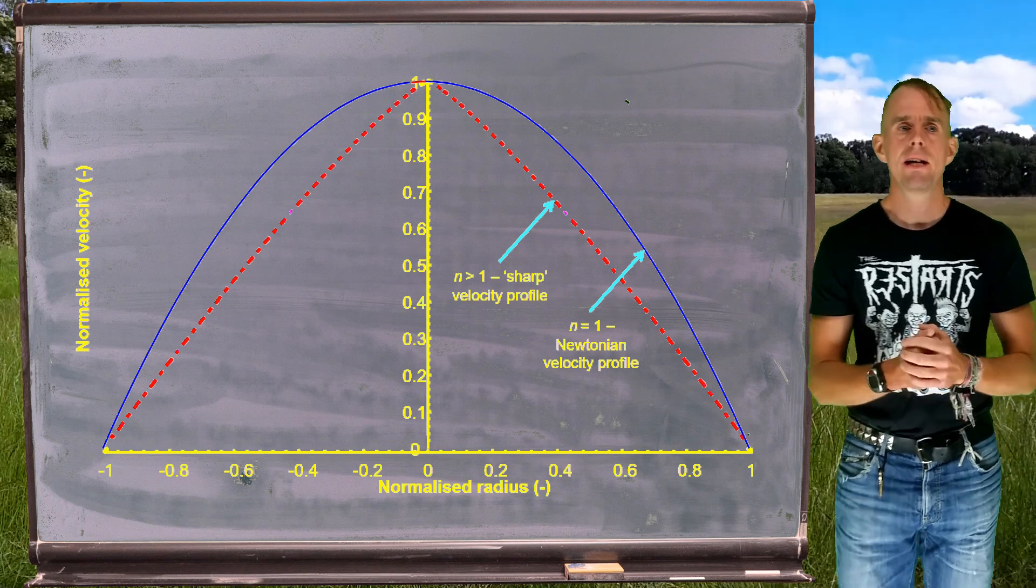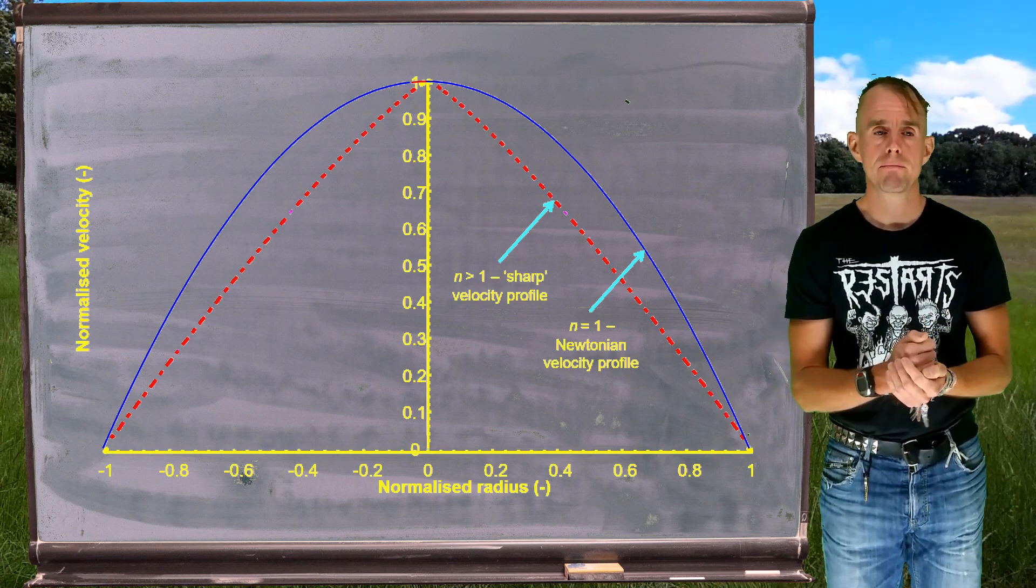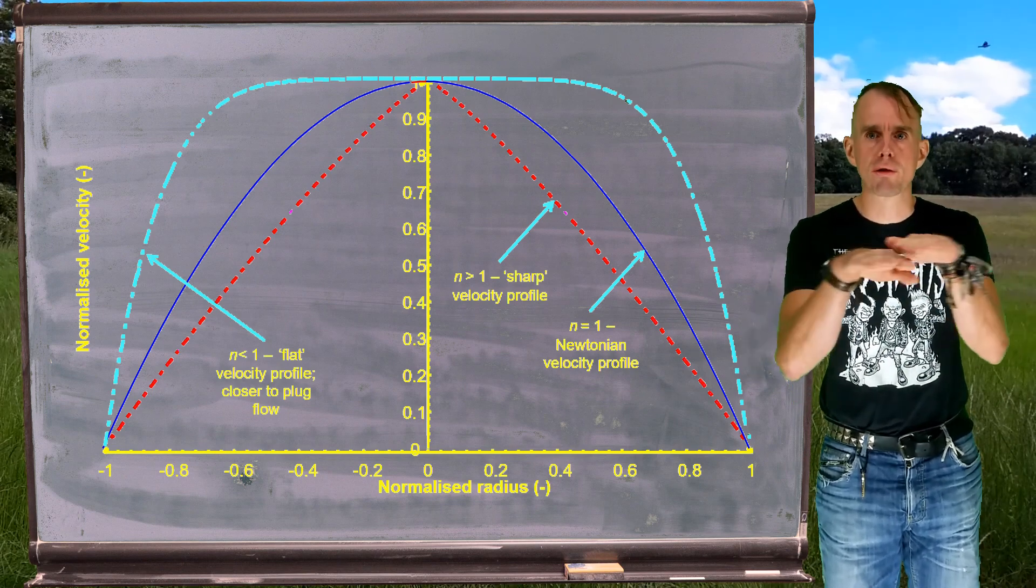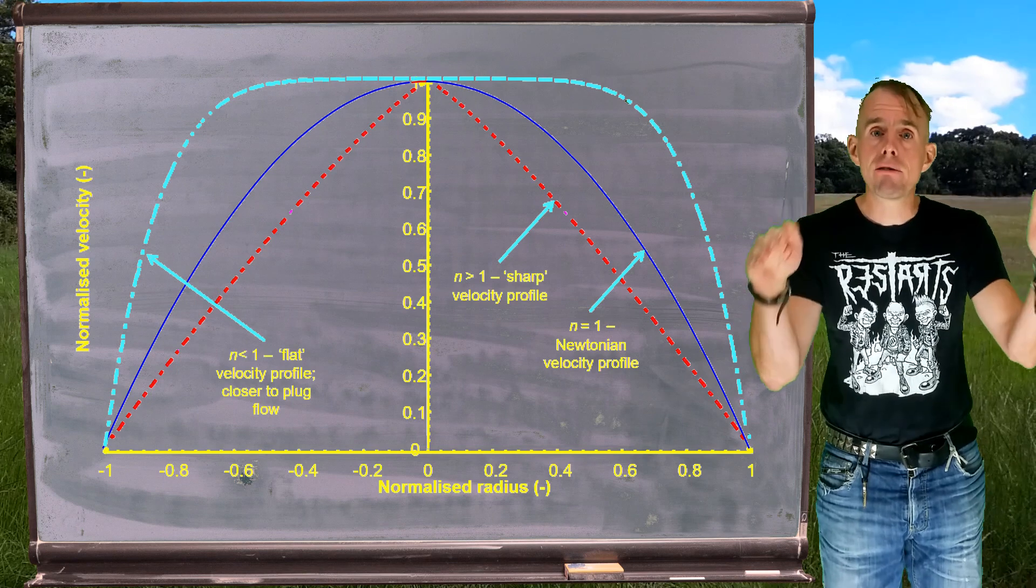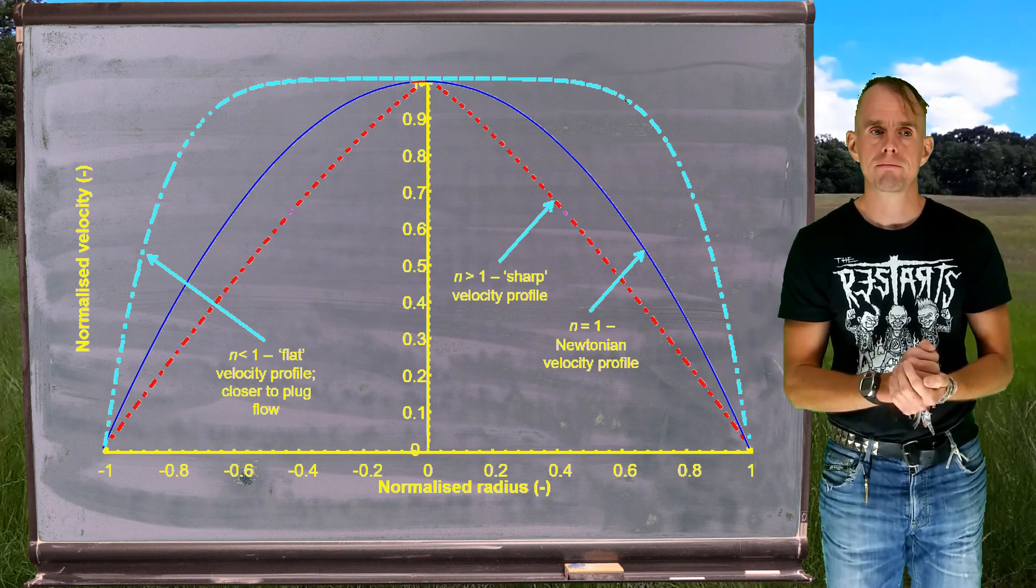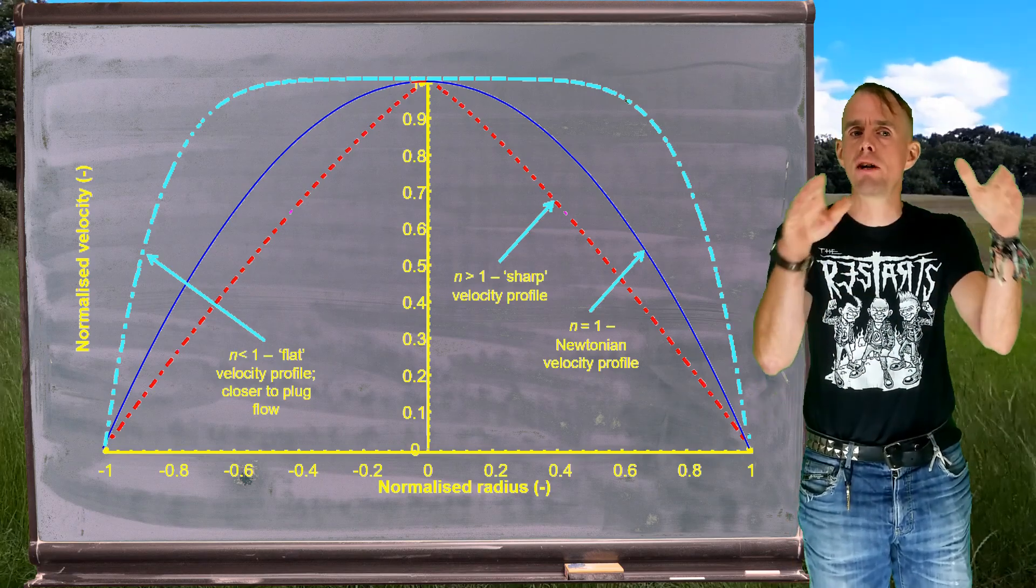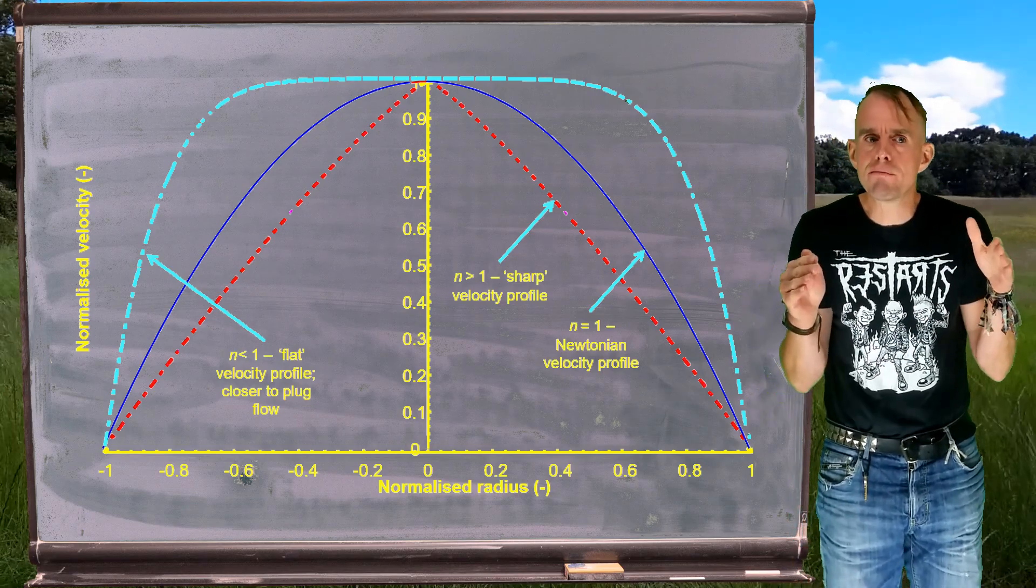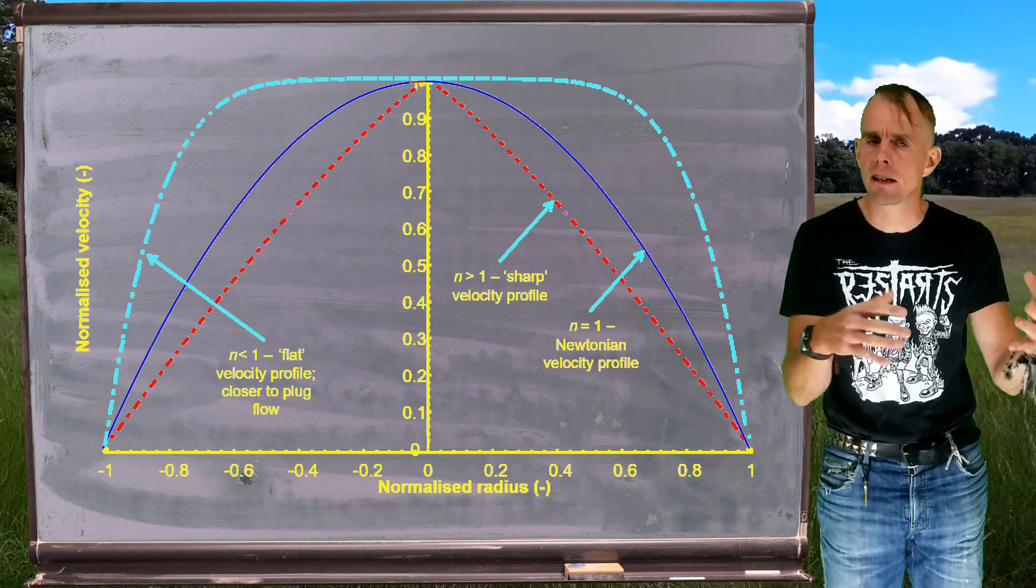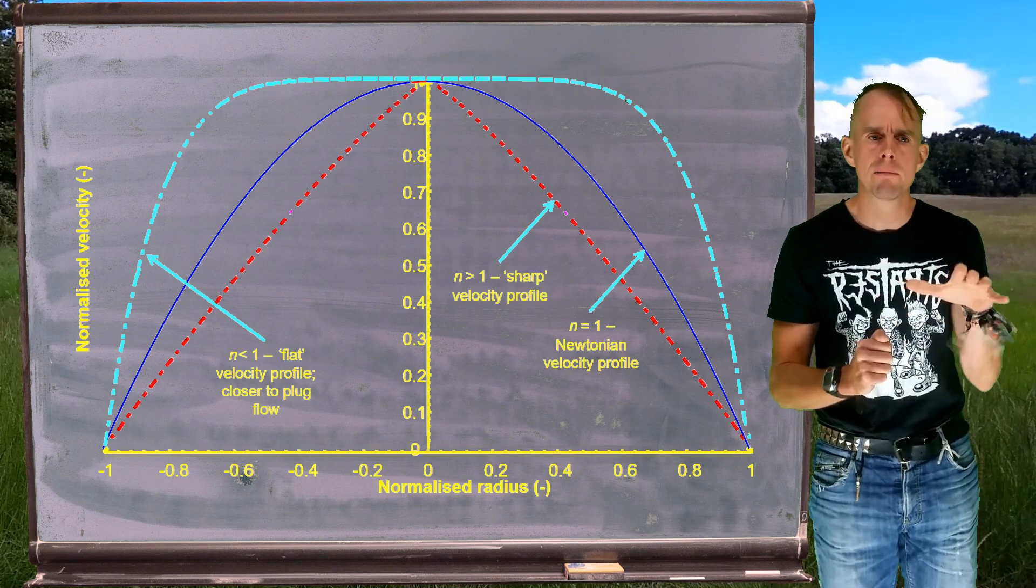And now, in light blue, I have my shear thinning fluid. And it's a lot closer to plug flow. You've got a plateau region across the core of the flow and very sharp shear rate gradients as you tend towards the walls. From a numerical standpoint, it's quite interesting because these sharp shear rate gradients actually give us numerical problems if we're writing computer code to solve this. And we have to change slightly how we do iteration procedures.